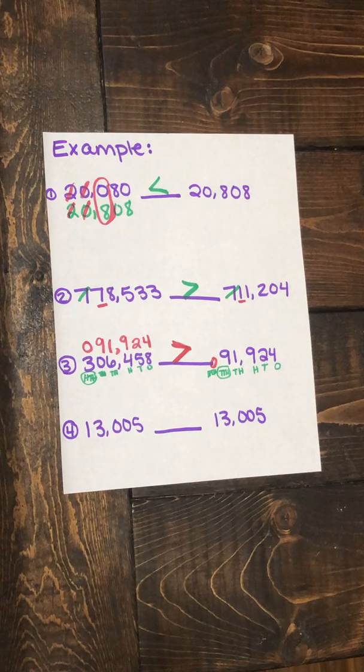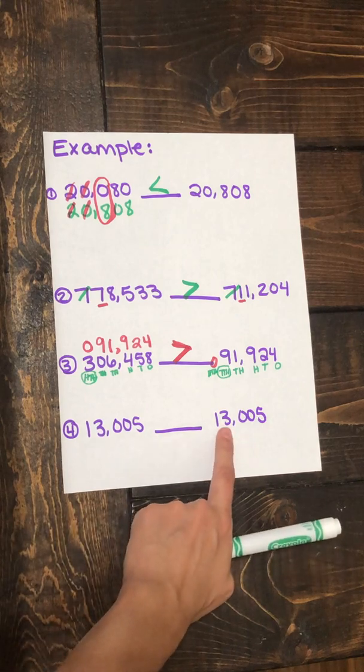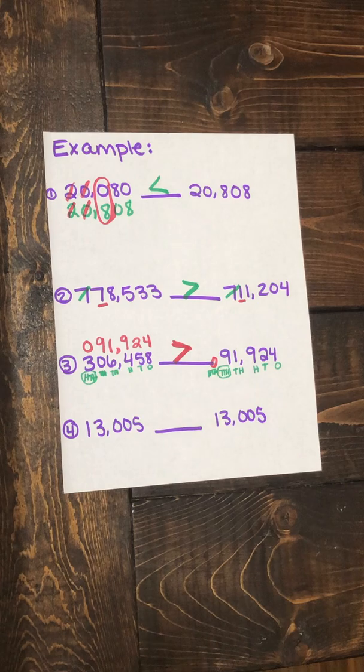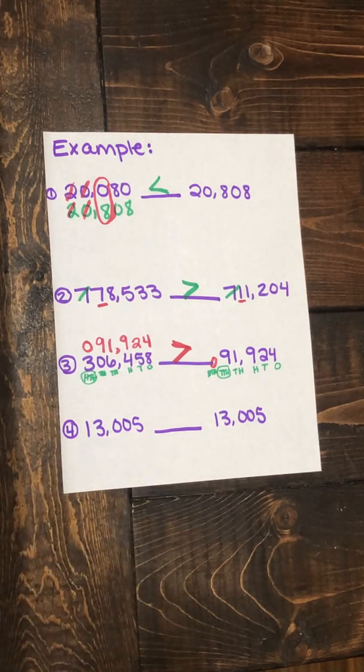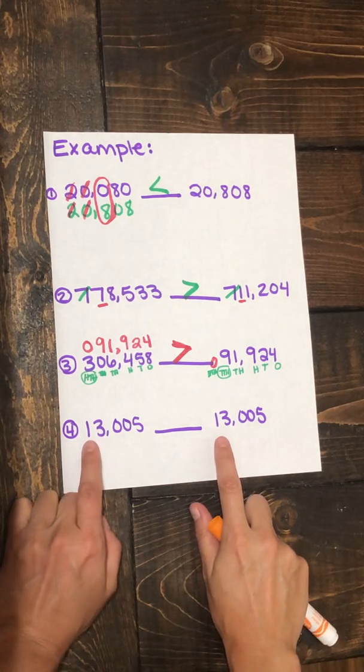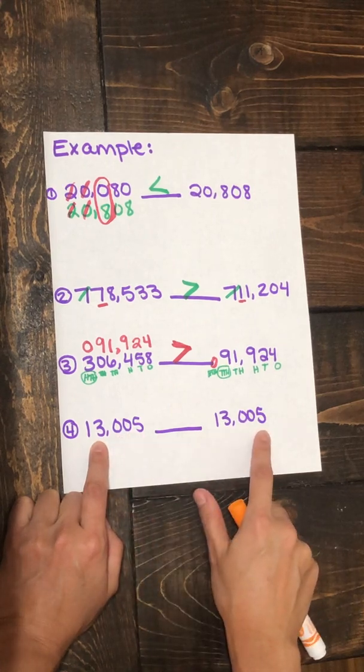We have 13,005. We're going to be comparing it to 13,005. So if you want, you can write the number, one number up underneath the other one, or let's see if we can do it without having to rewrite the numbers. So we check and make sure they are in the same place values.